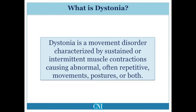Dystonia is a movement disorder characterized by sustained or intermittent muscle contraction, usually involving agonist and antagonist muscles. This means the opposite acting muscles are simultaneously contracting, which is sometimes called co-contraction. This causes abnormal posture and often repetitive movements, or both.